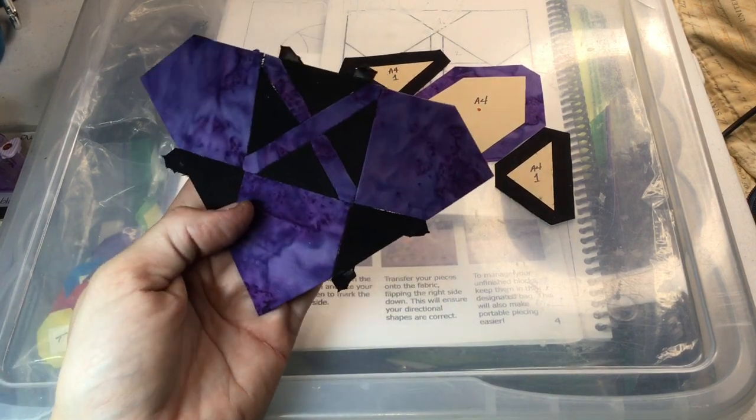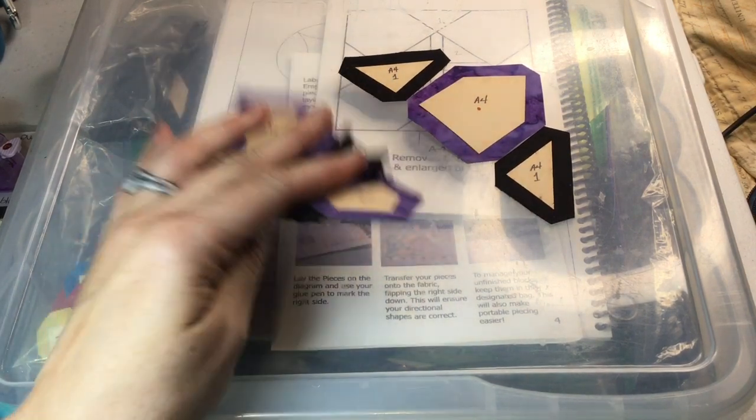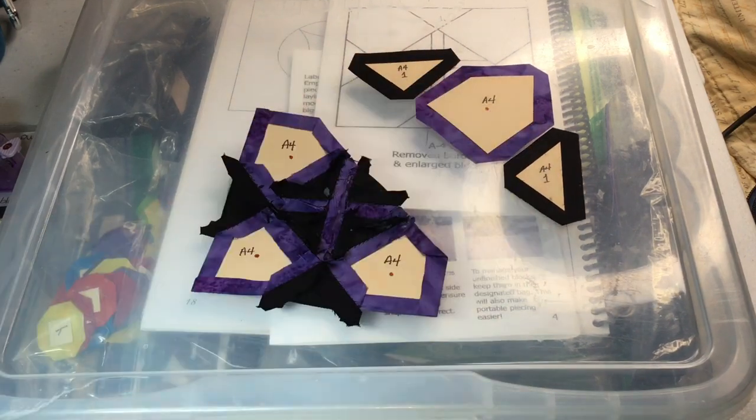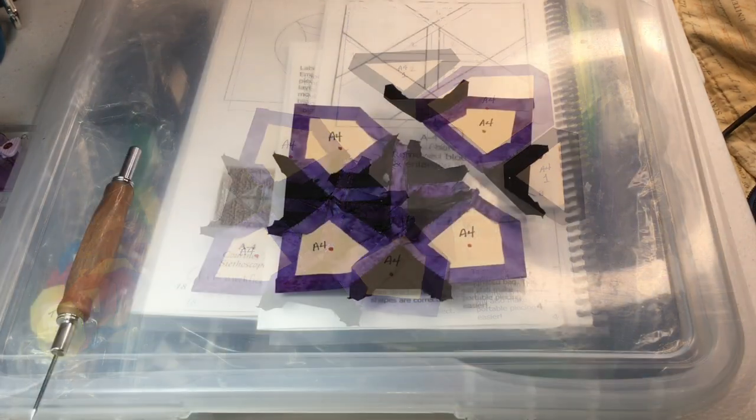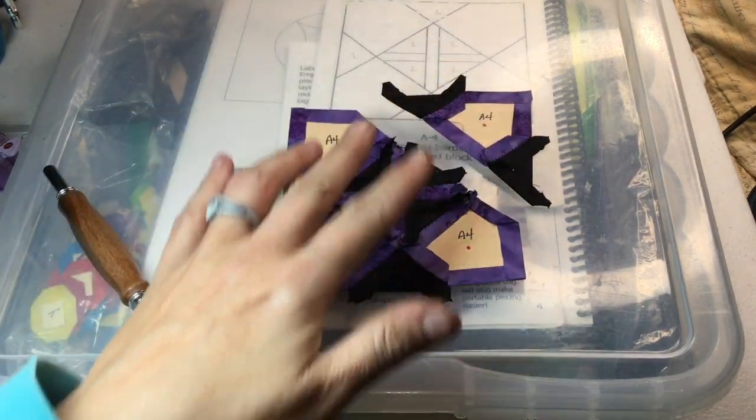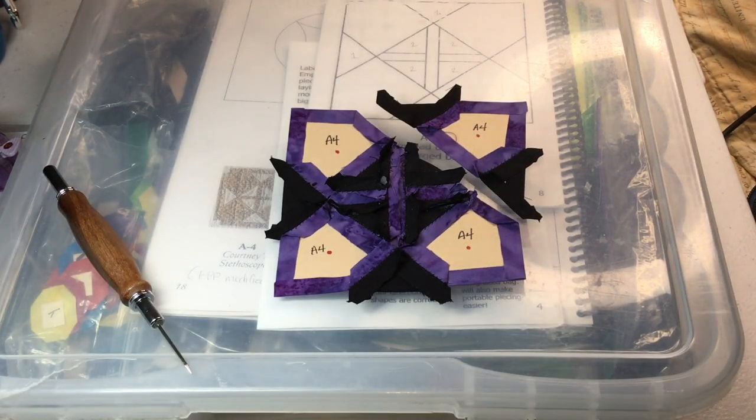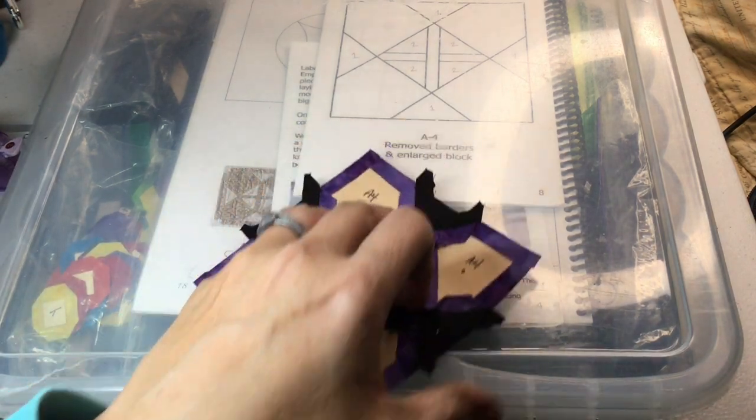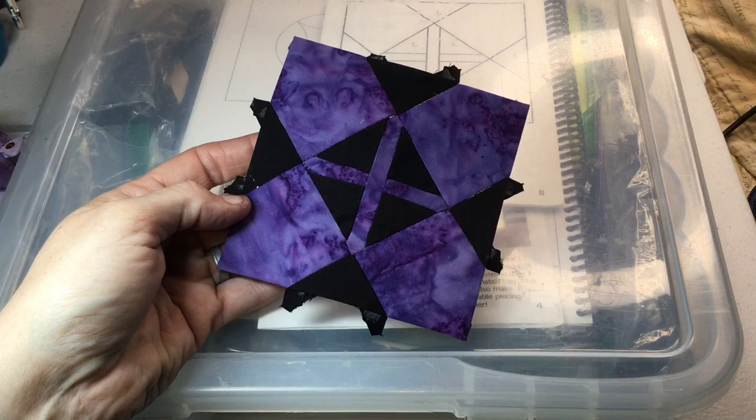I've got both of these rows connected and the next thing to do is to baste and attach these into one unit. I've assembled this last unit and now I will attach it to the rest of the block. Now I attach the last corner and now my A4 block has been completed.